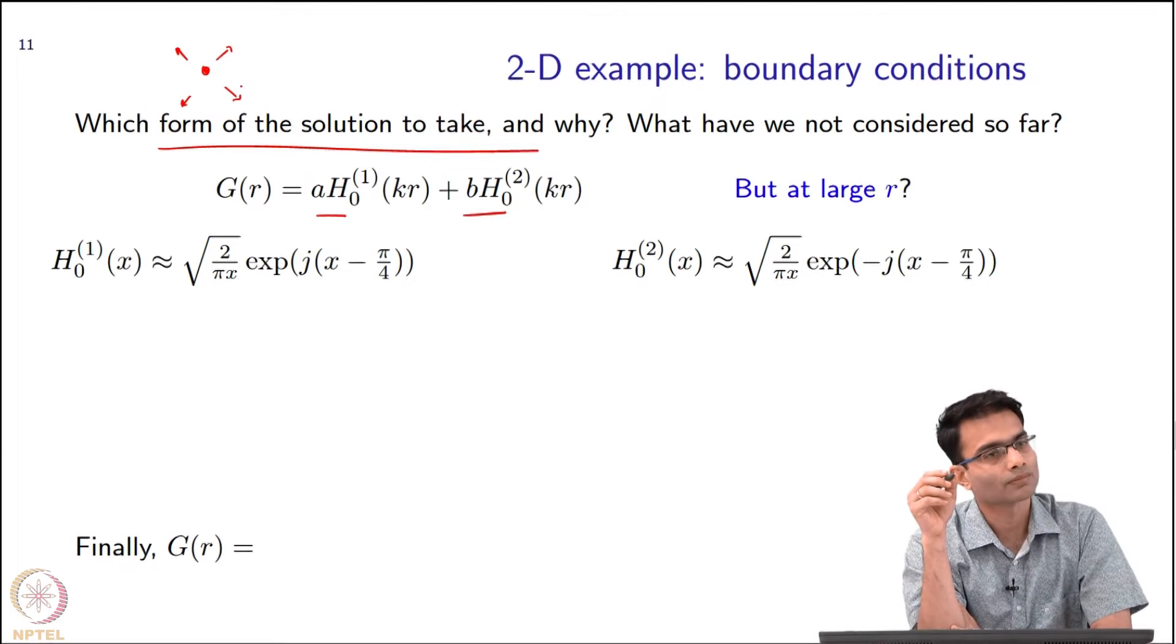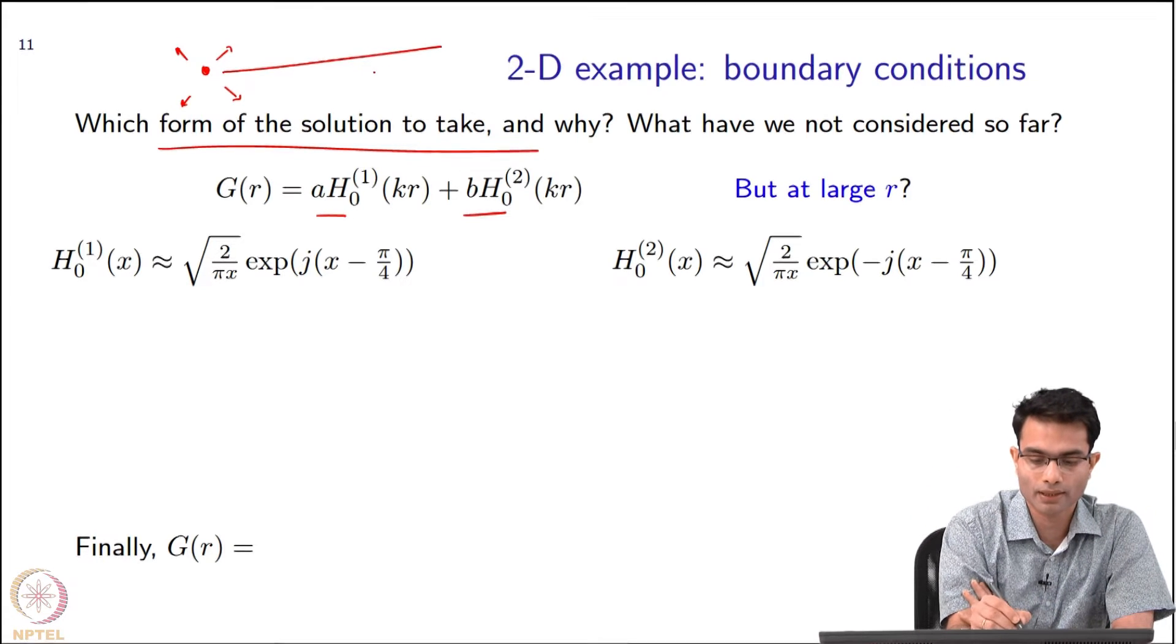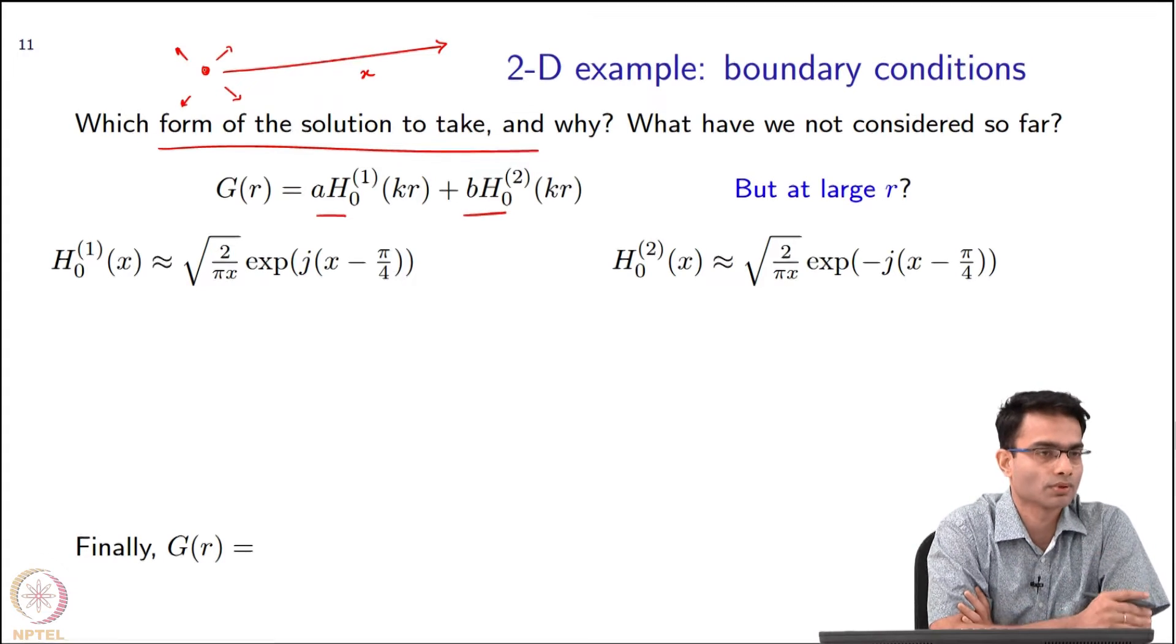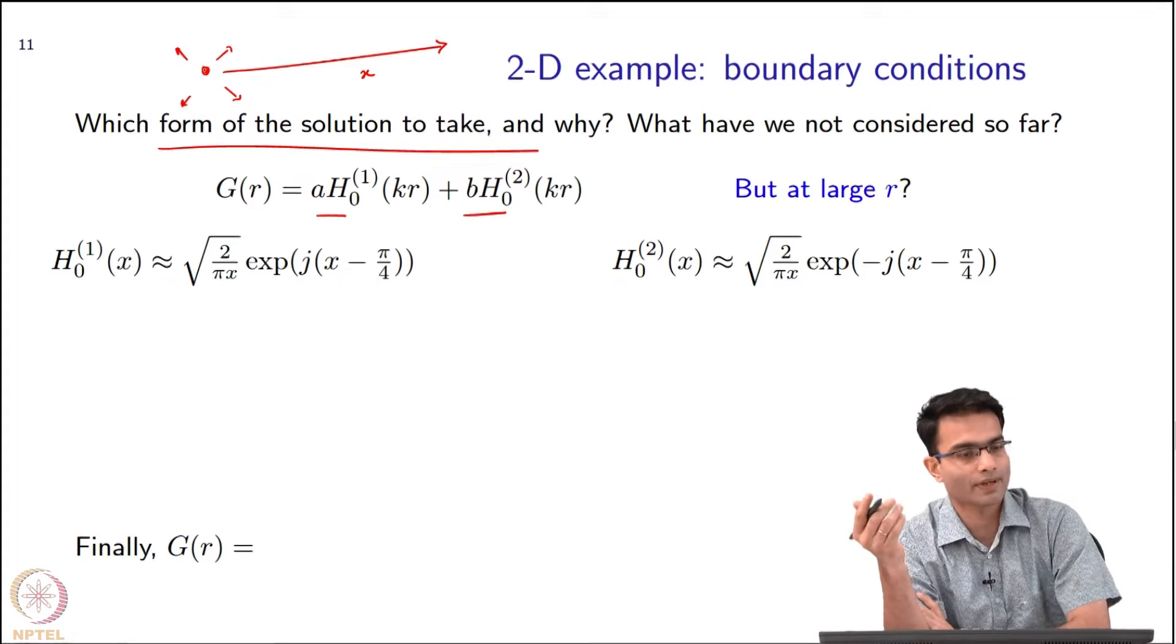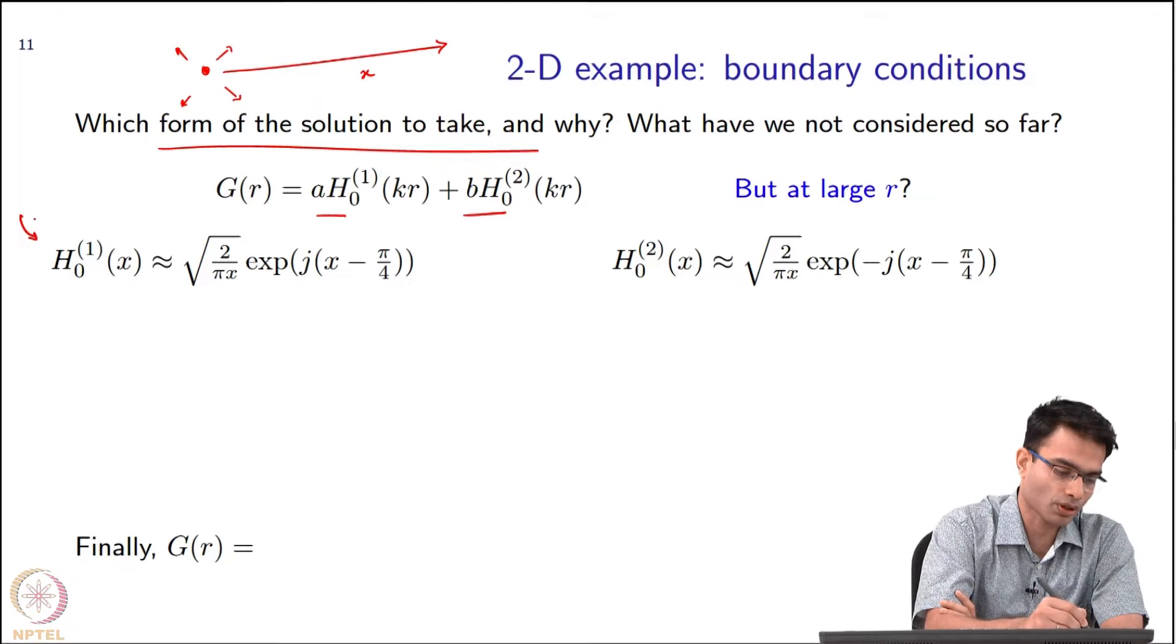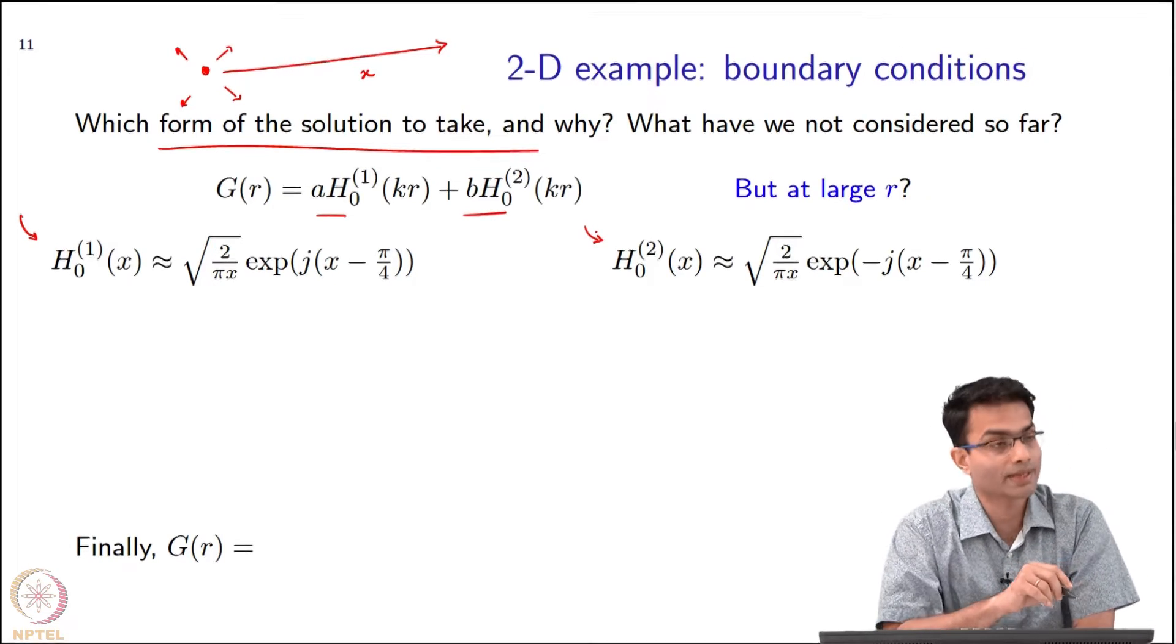Does that tell you anything? Let me give you a hint. Let us look at what happens when I go far away at very large x from the location of the point source, from the location of the impulse. If I go far away, I am giving you some extra information. I am telling you that h₀⁽¹⁾ and h₀⁽²⁾ have these what are called asymptotic forms.